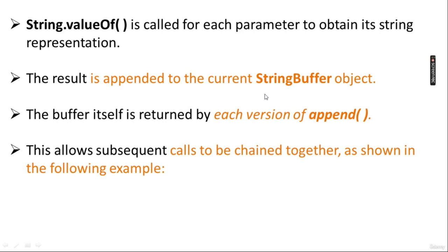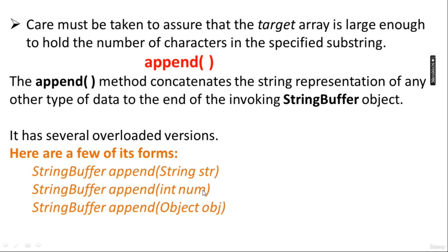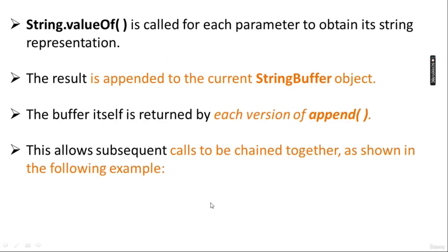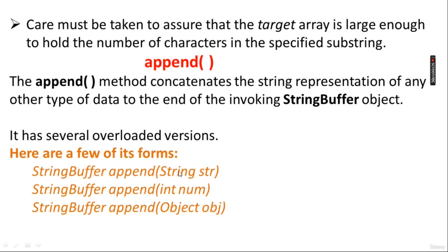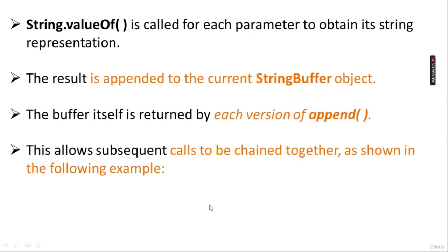String.valueOf() is called for each parameter to obtain its string representation. Numbers will be converted to string using String.valueOf(). Objects will be converted to string using String.valueOf(). The result is appended to the current StringBuffer object, and the buffer itself is returned by each version of append. This allows subsequent calls to be chained together.